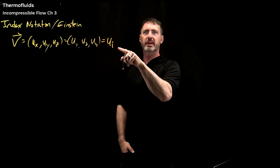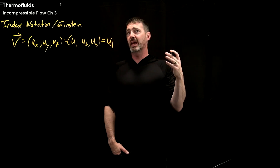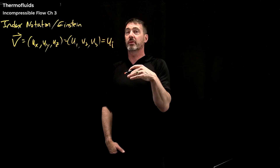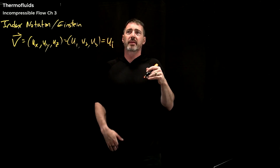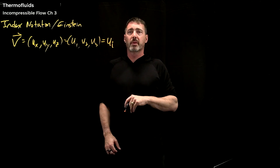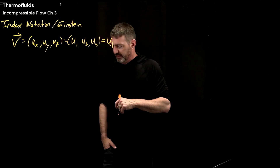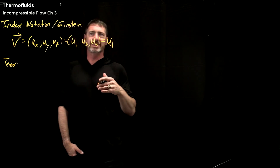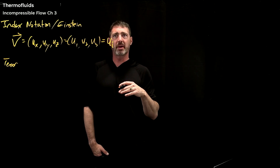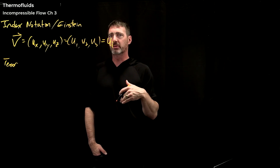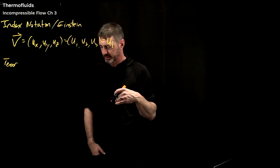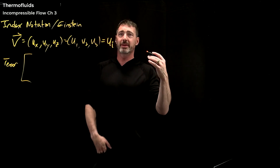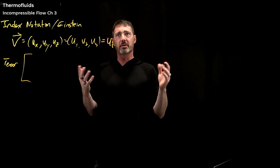Anytime you see an index — I'll use i's, j's, k's, L, M, N, P's — anytime you see an index i that's sort of by itself with no other friends, this is implying a vector. And then you can have tensors or a matrix. I'm not going to get into the difference between tensors and matrices — that would be next-level math once you're getting into things like general relativity. But the tensor for us is just going to be a three-by-three matrix, since we're all living in R3.